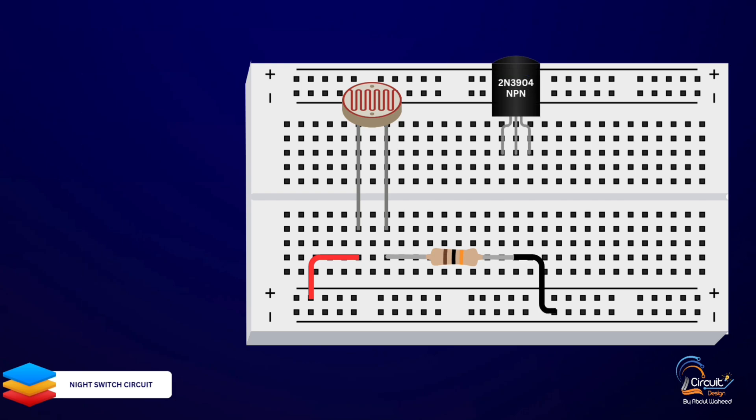Placing the 2N3904 transistor. Next, let's add the 2N3904 NPN transistor. The flat side of the transistor should be facing you. The legs, from left to right, are the emitter, base, and collector.